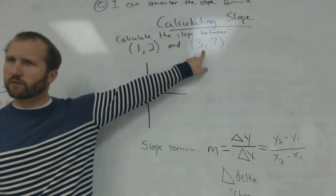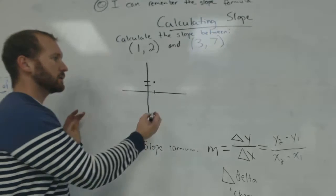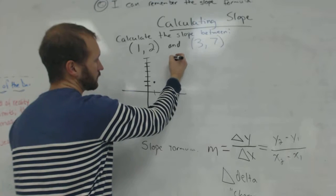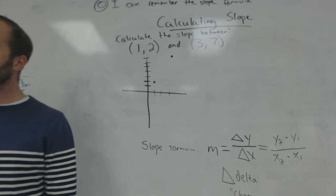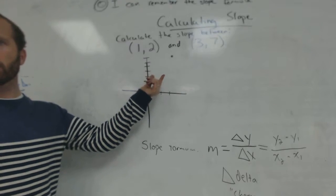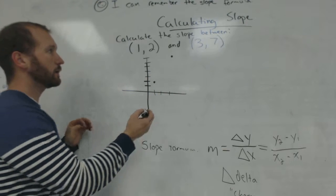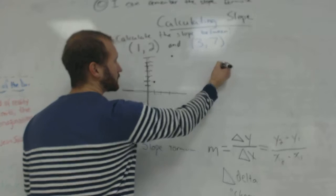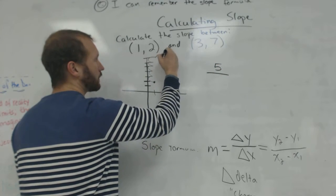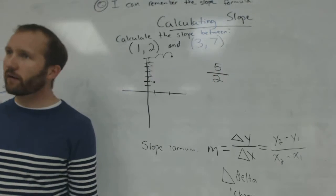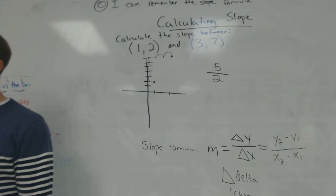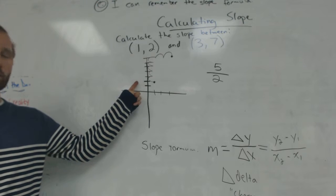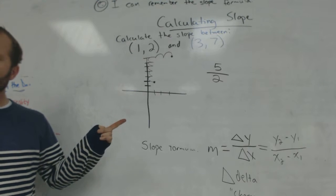Where is the point 3, 7 on this graph? Yeah, we just go over 3 and up 7. 1, 2, 3, 4, 5, 6, 7. This is the point 3, 7. So now that I have it on here, I could calculate the slope. Change in y. We went up 1, 2, 3, 4, 5 between these two points. And we go over 1, 2. So my slope is 5 halves.